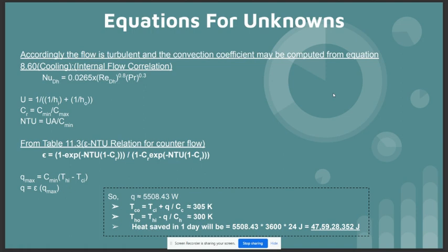Next, we get q max is equal to c min times t hi minus t ci, and q is equal to epsilon times q max. After all the calculations, we get that the heat saved in one day will be 4,759,283,552 joules. Thank you.